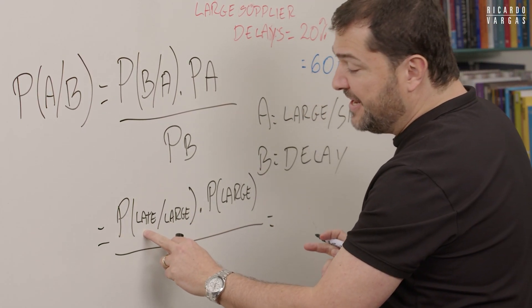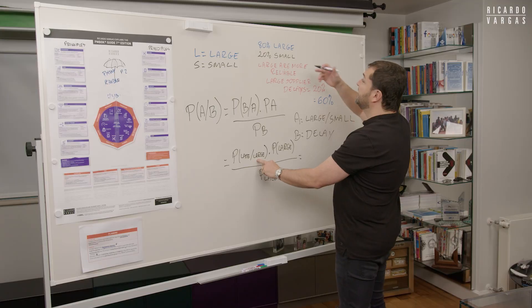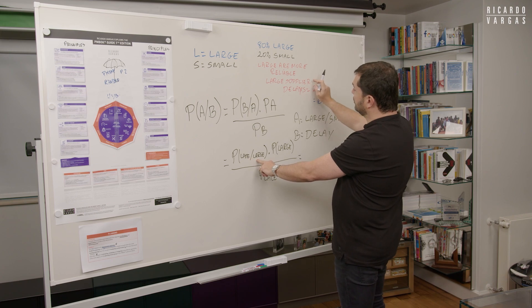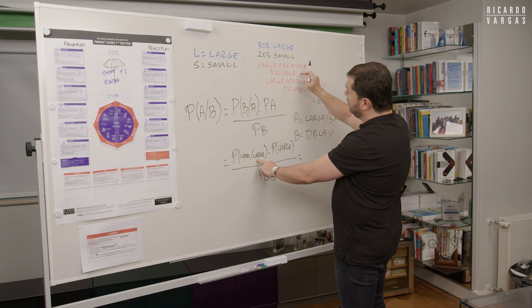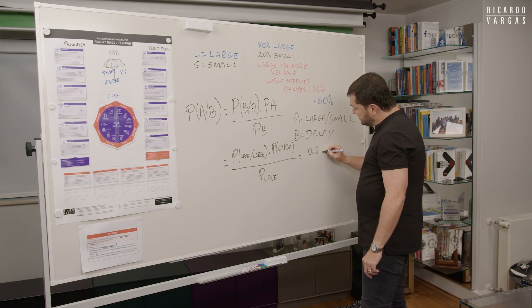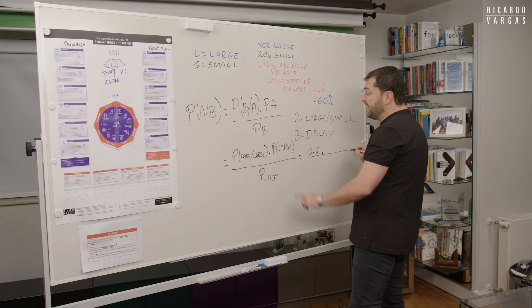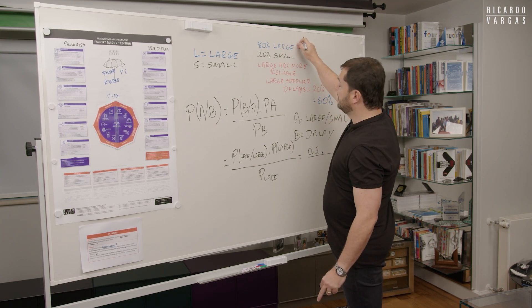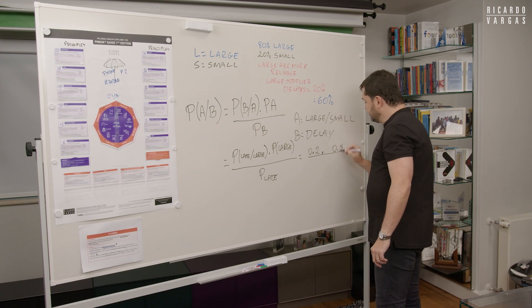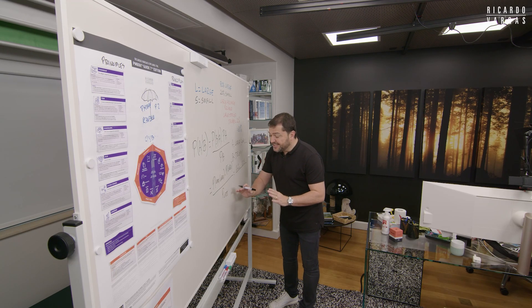Let's translate. The probability of being large given that it's late, it's the probability of being late given it's large. It's the opposite. Times the probability of being large divided by the probability of being late.